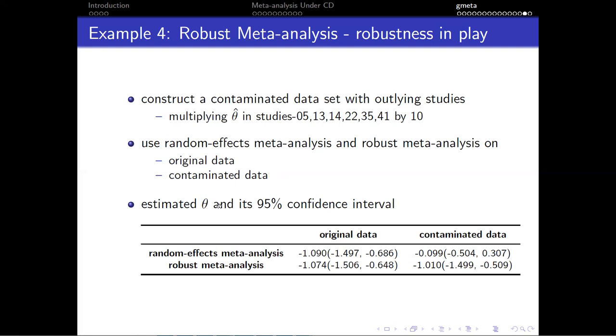Here is the result represented in this table. We can observe that the result from robust meta-analysis on the contaminated data is almost the same as the result from the original data. So the result is robust to the outlier.